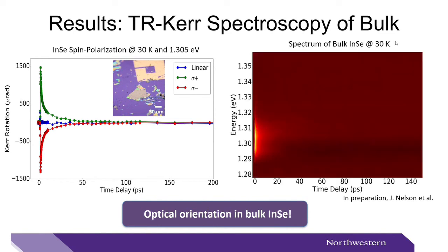On the right is a heatmap of the Kerr spectrum. The y-axis marks the photon energy, the x-axis the time delay, while the color represents the strength of the Kerr signal. It can be seen that the signal is maximized somewhere between 1.30 and 1.31 electron volts.